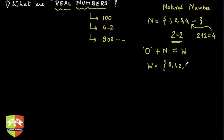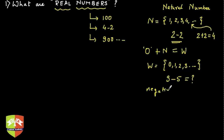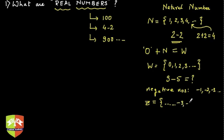The problem of 2 minus 2 was solved with zero, but humans encountered another problem when subtracting a larger number from a smaller one, like 3 from 5. Before learning integers, you wouldn't know the answer. So negative numbers — like minus 1, minus 2, minus 3 — were formulated. Together with whole numbers, they formed a new set called integers, represented by Z: ..., minus 3, minus 2, minus 1, 0, 1, 2, 3, and so on.